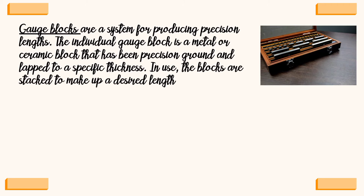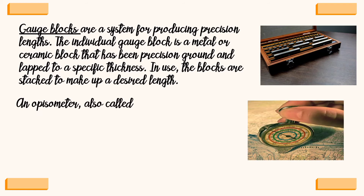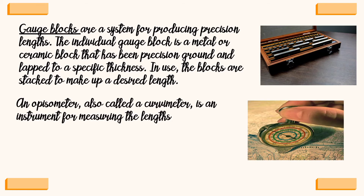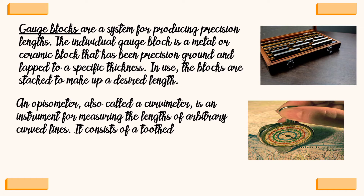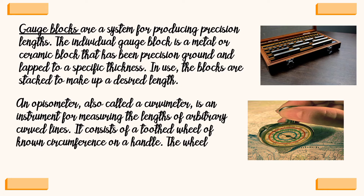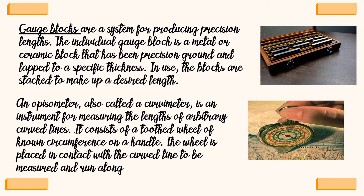Gauge blocks are a system for producing precision lengths. The individual gauge block is a metal or ceramic block that has been precision ground and lapped to a specific thickness. In use, the blocks are stacked to make up a desired length. An opisometer, also called a curbing meter, is an instrument for measuring the lengths of arbitrary curved lines. It consists of a toothed wheel of known circumference on a handle; the wheel is placed in contact with the curved line to be measured and run along its length.